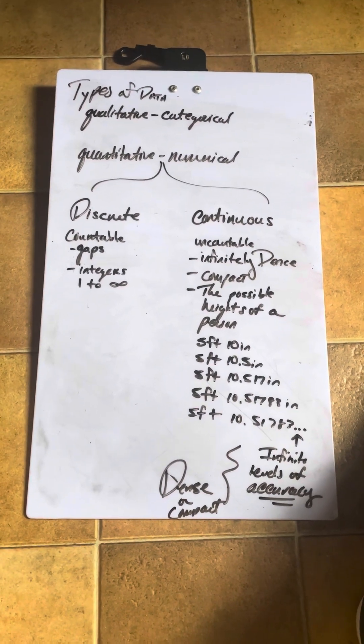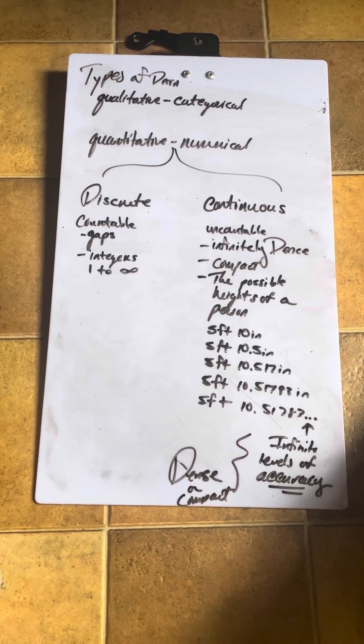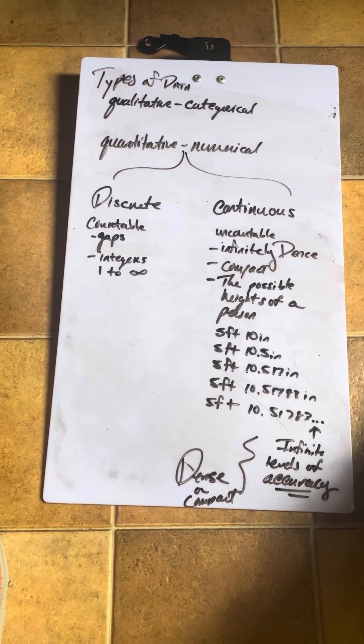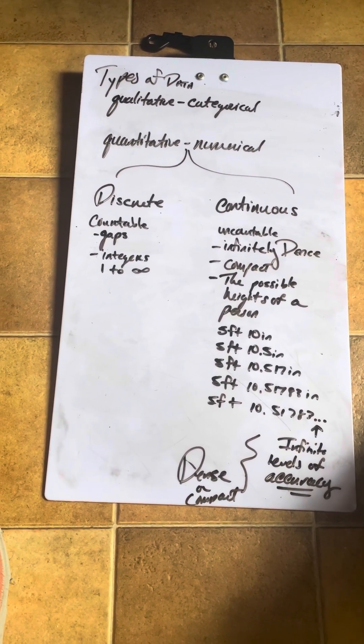So we are looking at types of data and we have two types of data. Qualitative, sometimes it's called categorical, and quantitative, sometimes it's referred to as numerical.